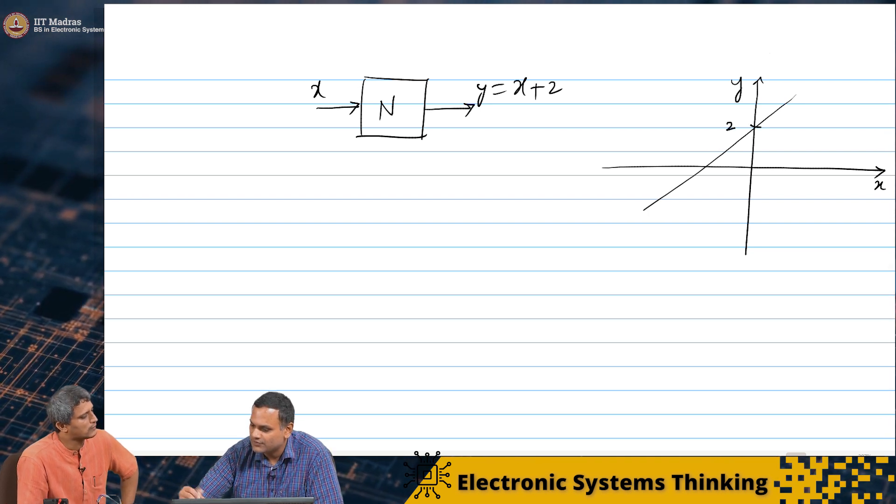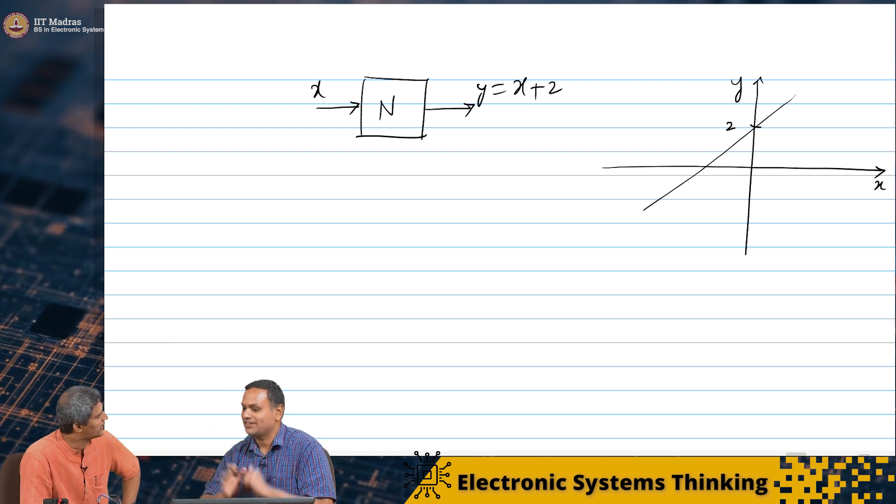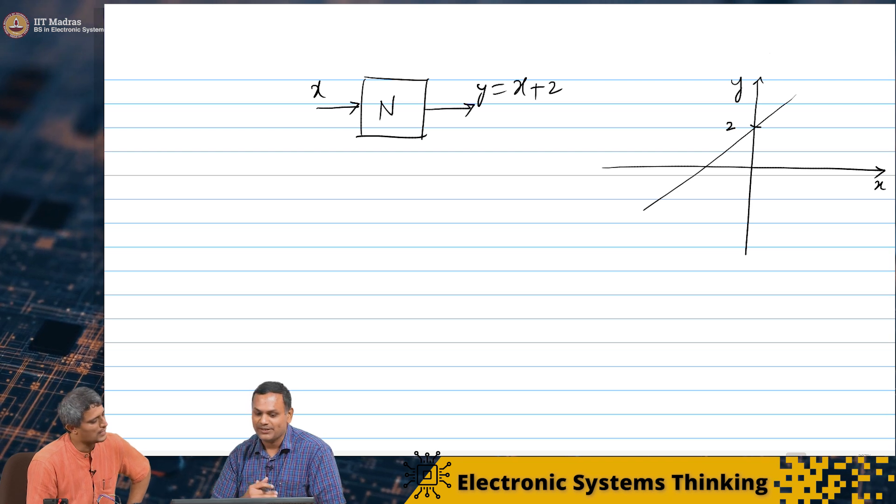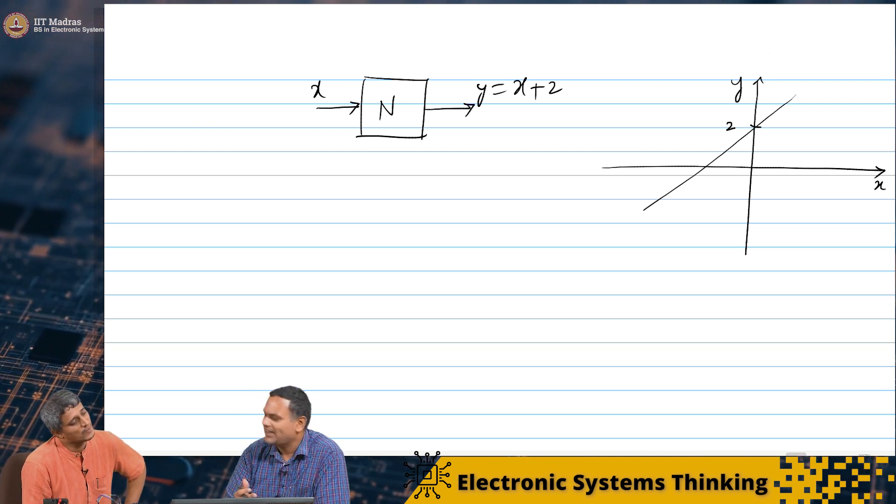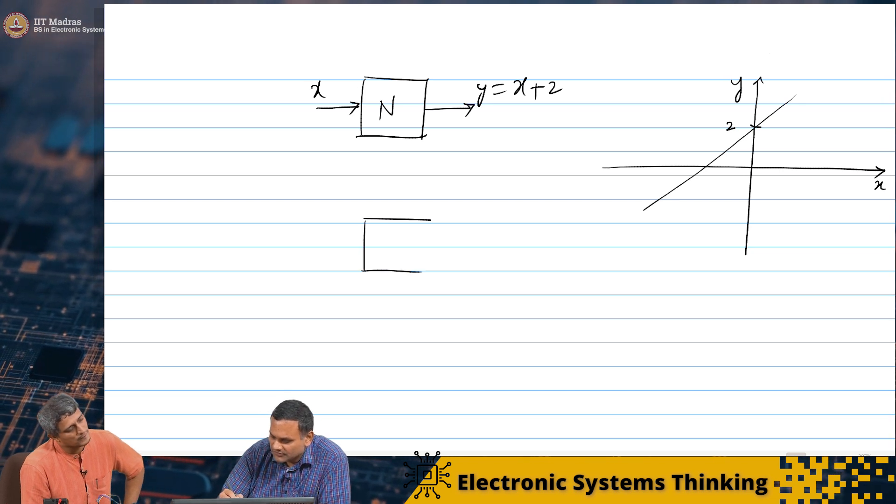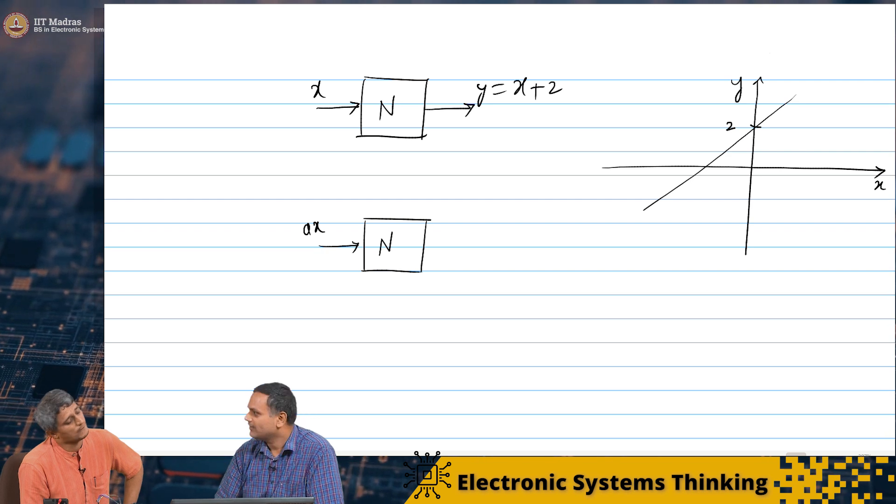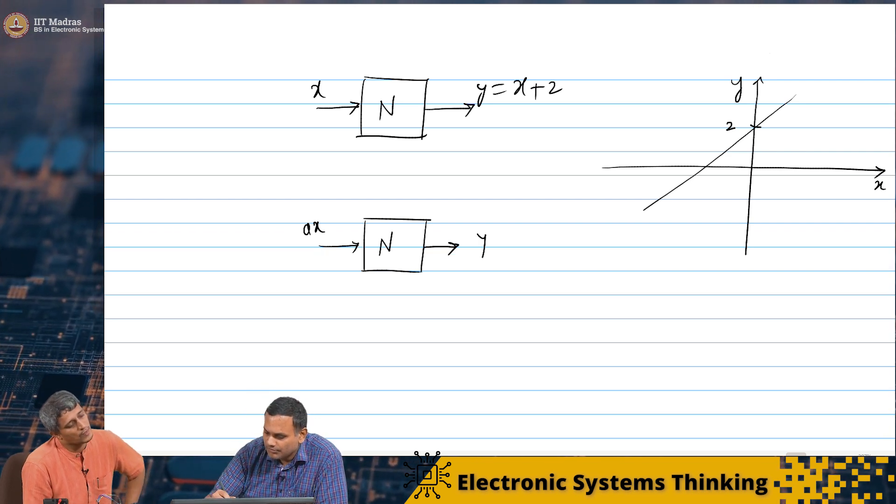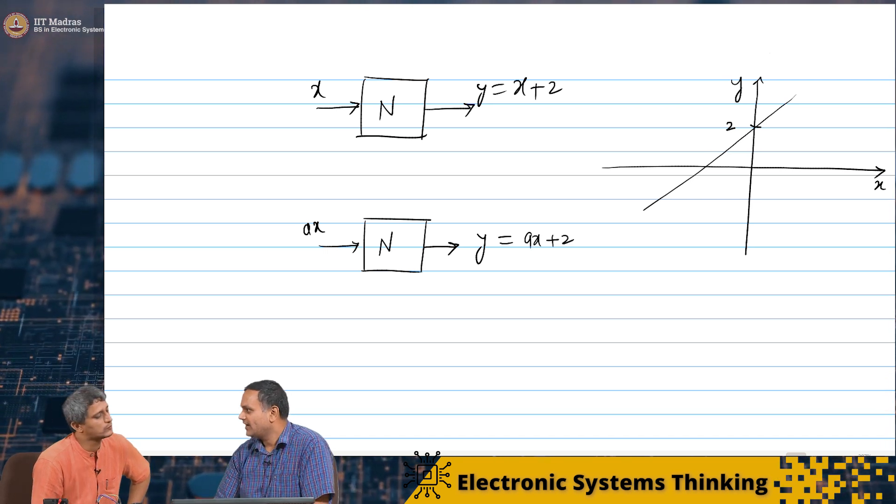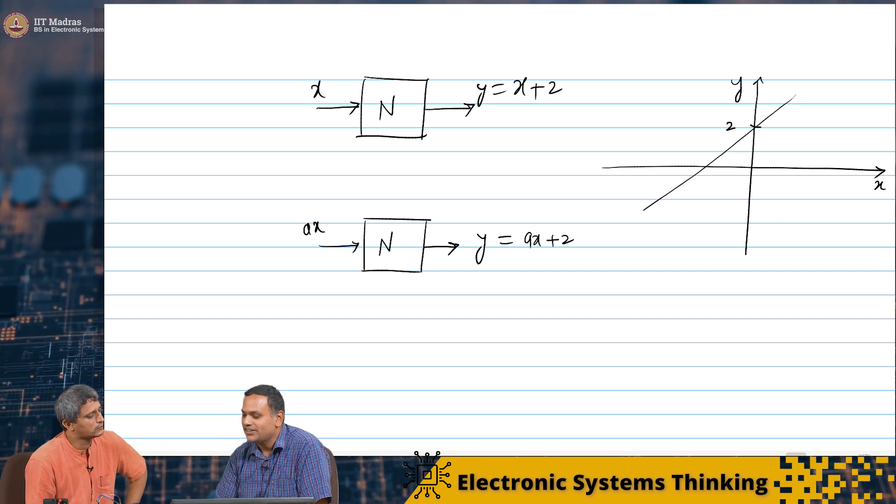So I do not see the need for that. Perfect. So let us see. So when x is equal to 0, y is 2. So it is a straight line. It is linear. That is what I think. It is linear. So let us see whether it satisfies homogeneity principle. Absolutely. So I am going to give it input as a times x. So the output y is ax plus 2. What did I expect for a network satisfying homogeneity? I wanted.